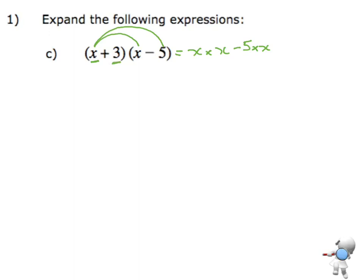Then I take the second element in the first bracket and multiply that by each of the pieces in the bracket. That gives me plus 3 times x, and then 3 times minus 5, so minus 5 times 3.